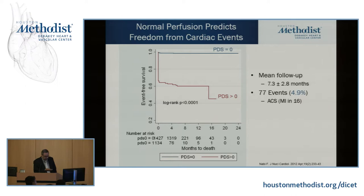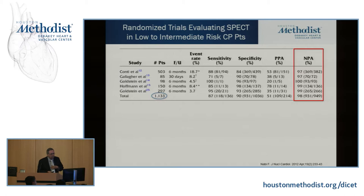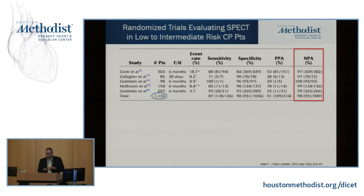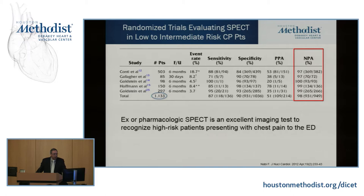A meta-analysis of randomized trials confirms that the negative predictive value of a normal nuclear stress is excellent — very, very high. The positive predictive value is also pretty decent. That's one reason why this test in the acute setting has become much more popular. It is an excellent imaging test to recognize high-risk patients presenting to the emergency room with chest pain.